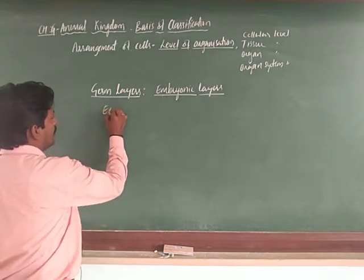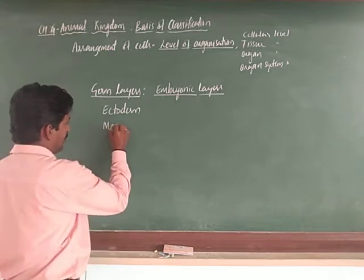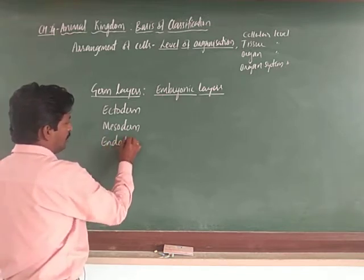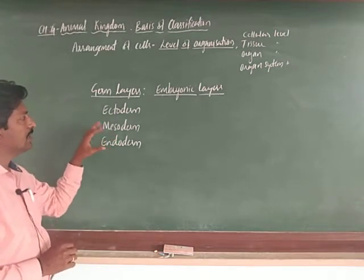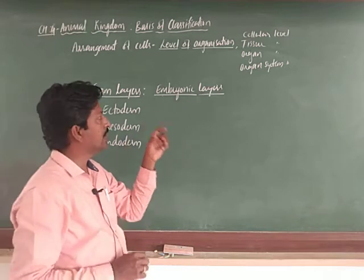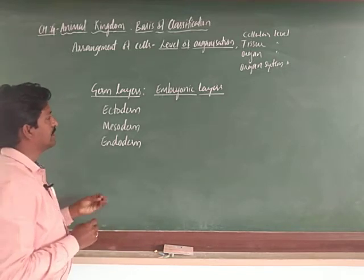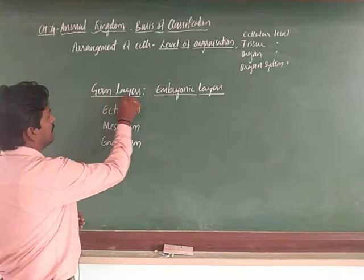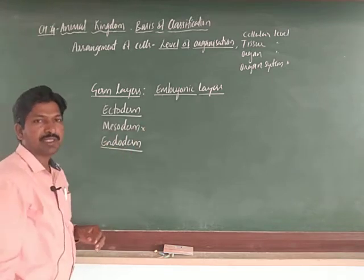There are actually three embryonic layers: the outer ectoderm, the middle mesoderm, and the inner endoderm. In embryonic stage, an animal must show either two layers or three layers. Some animals, like cnidarians, show only two germ layers — ectoderm and endoderm — and there is no mesoderm.